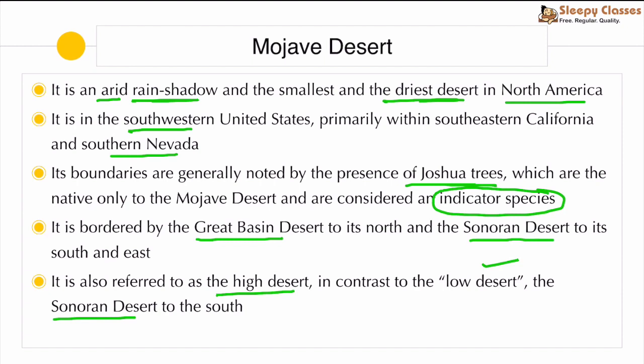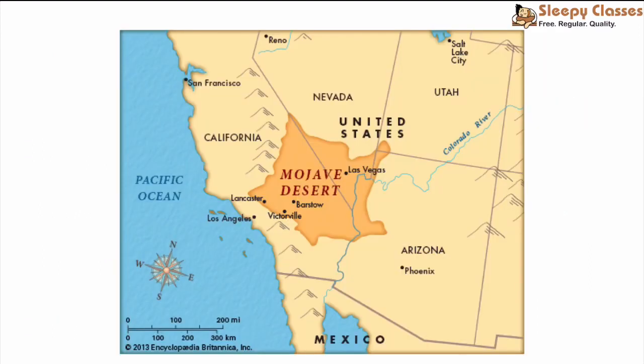The Mojave Desert is important in the context of the world's largest plane, which we will discuss shortly — it took off from California. The reason for the desert is the California Current, which is a cold ocean current along the western edges of the US. This cold current, combined with the rain shadow effect, is the reason the Mojave is a desert.